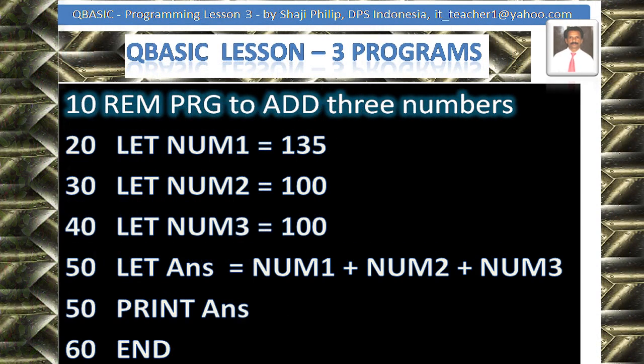Now, how to add three numbers. The procedure is the same — assign 135 to num1, assign 100 to num2, and store a third value to num3. Then calculate: ans = num1 + num2 + num3. When you add all the variables you will get the answer. Just print the answer and end the program.